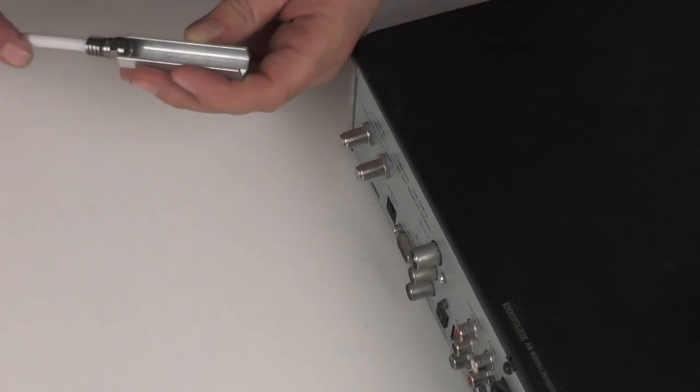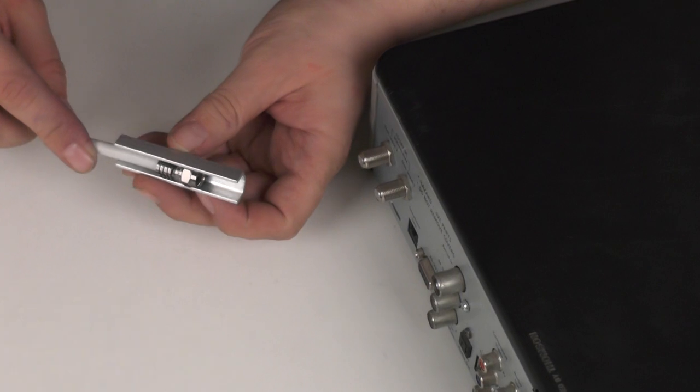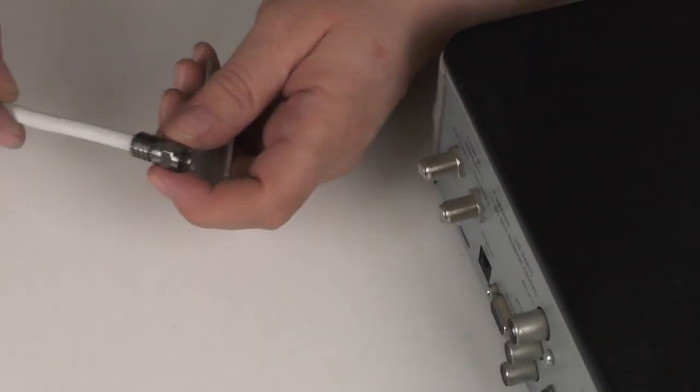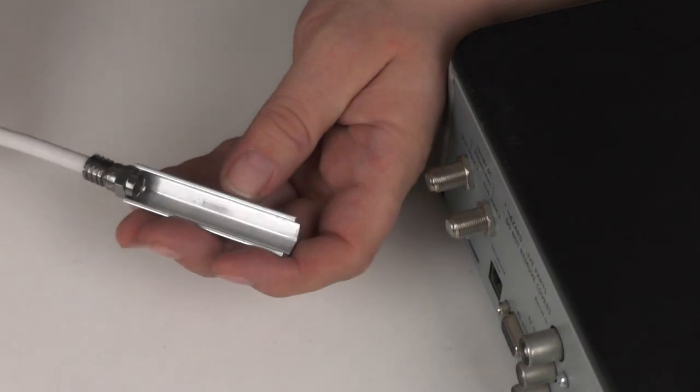If I can just show you in operation here, we're turning it round and it's only the nut that's turning. We're not twisting the cable in any way, so there's no chance of your cable coming out or being damaged while you're doing this.